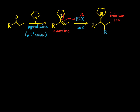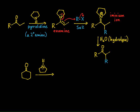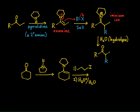We've seen that imines and iminium ions can hydrolyze fairly readily, so I can treat this with water and undergo hydrolysis to get back the ketone. In the process, I have alkylated that alpha position. As an example, I can take cyclohexanone, react it with pyrrolidine to get my enamine, then react that enamine with propyl iodide, followed by aqueous acidic hydrolysis, and I have added a propyl group to the alpha carbon of my ketone.